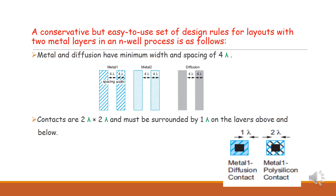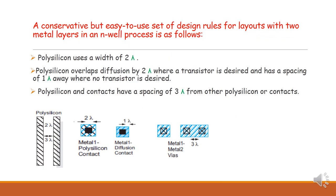For contacts, the metal 1 to diffusion contact size is 2 lambda by 2 lambda. The contact must be surrounded by 1 lambda on the layers above and below, making the total size 3 lambda. For polysilicon, the width is 2 lambda and the spacing between polysilicon lines should be 3 lambda. For a polysilicon contact, the contact size is 2 lambda with 1 lambda spacing above and below, giving a total size of 3 lambda.